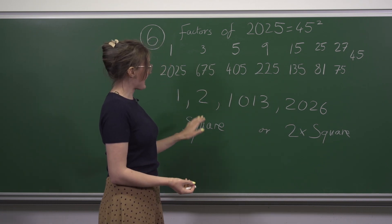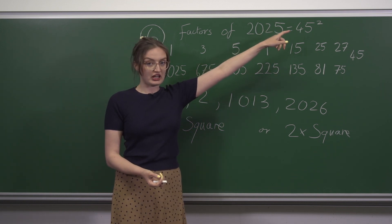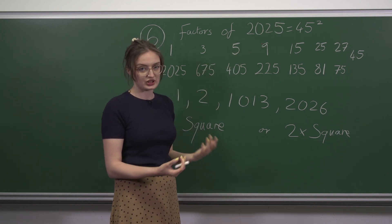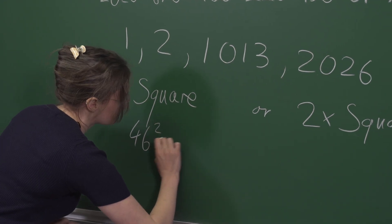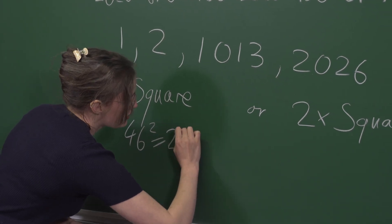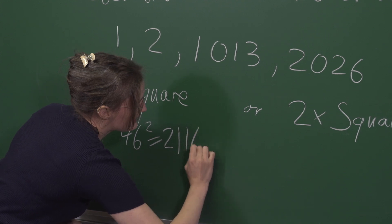Well, we can look for the next square after 45 squared, which would be 46 squared, which is 2,116.